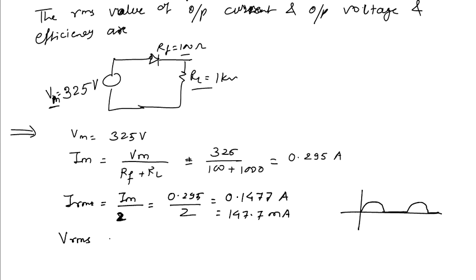Now the RMS value of output current, output voltage will be the RMS value of current into load resistance RL, will be 147 volts.